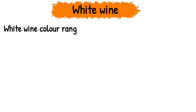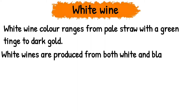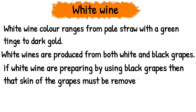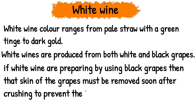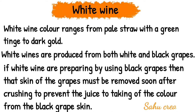White wine: White wine color ranges from pale straw with a green tinge to dark gold. White wines are produced from both white and black grapes. If white wine is prepared using black grapes, then the skin of the grapes must be removed soon after crushing to prevent the juice from taking on color from the black grape skin.